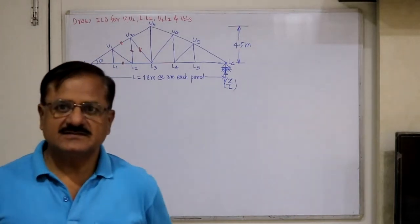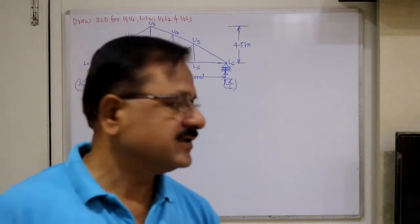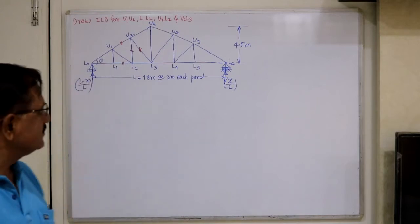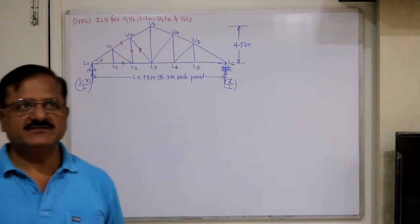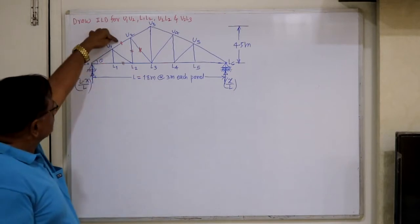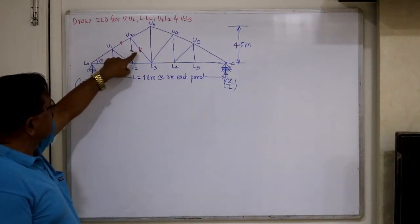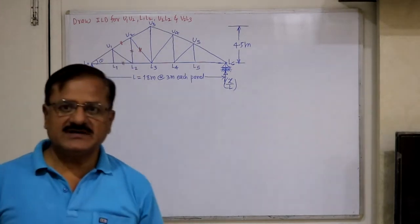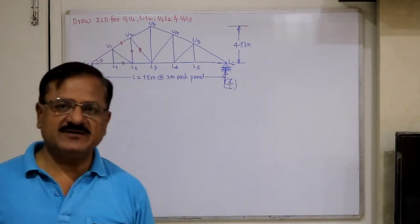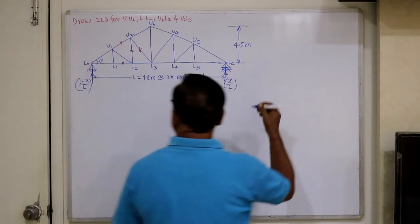Let us consider one more truss to construct influence line diagrams for various members. Generally in examinations, influence line diagrams for one top chord member, one bottom chord member, one vertical member, and one diagonal member are asked. Therefore, let us consider top chord member U1-U2, bottom chord member L1-L2, one vertical member, and one diagonal member. If you are able to construct influence line diagrams for these four members, then for any remaining members you can construct them very easily.